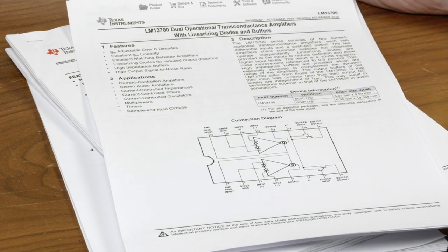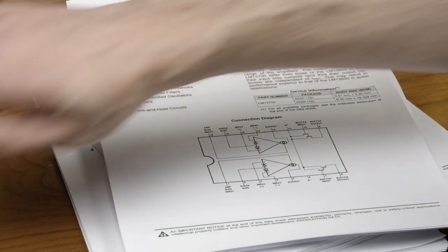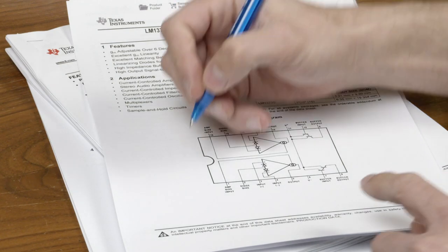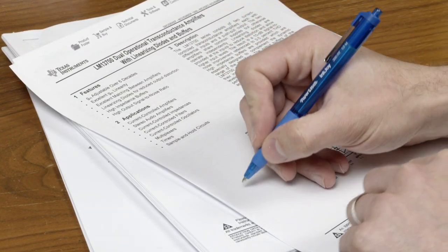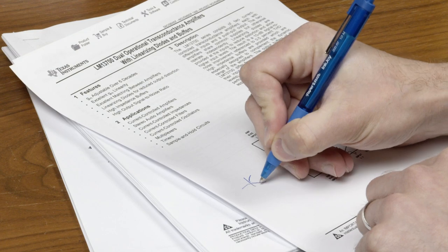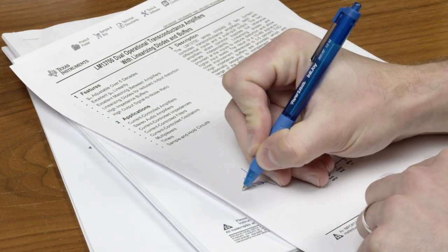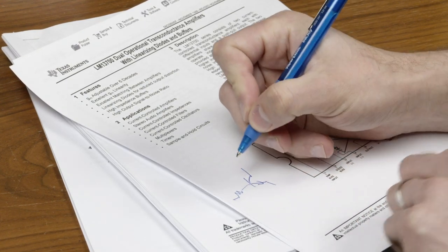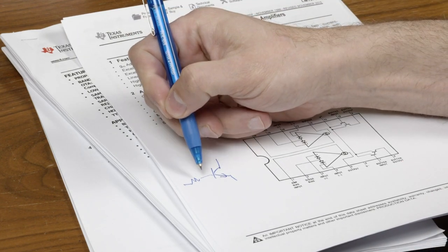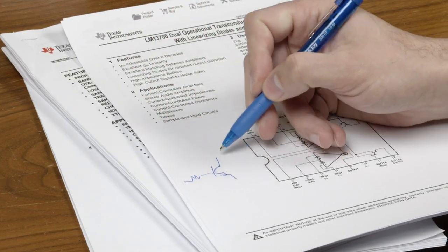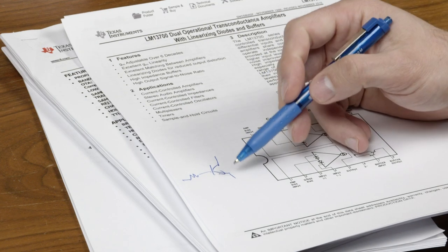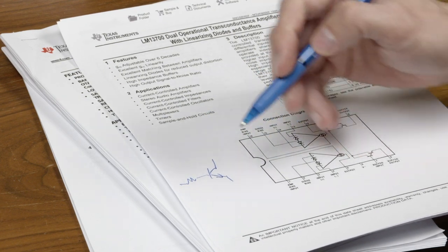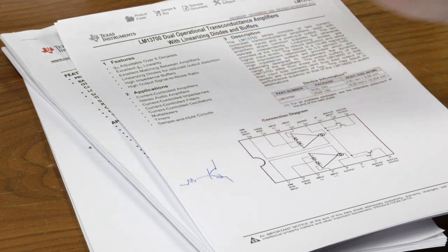Transconductance means you're going from voltage to current. So a transconductance amplifier in its simplest form, let's say you've got some transistor here. You've got a resistor here going into the base. Voltage goes in here. Resistor turns it into a current. The conductance of the transistor changes, and you have some current flowing through here.